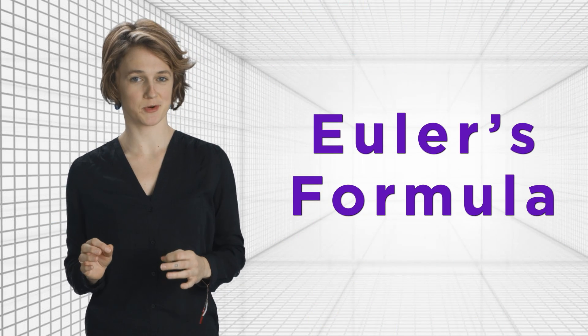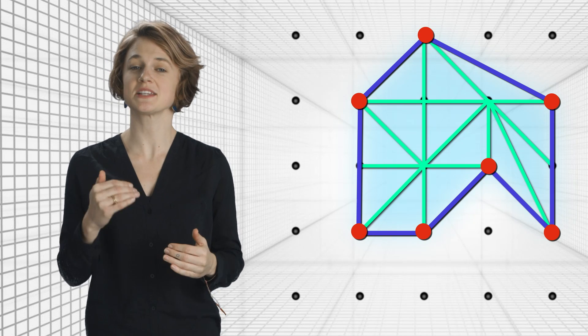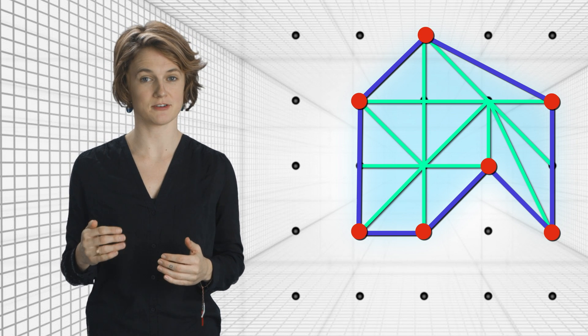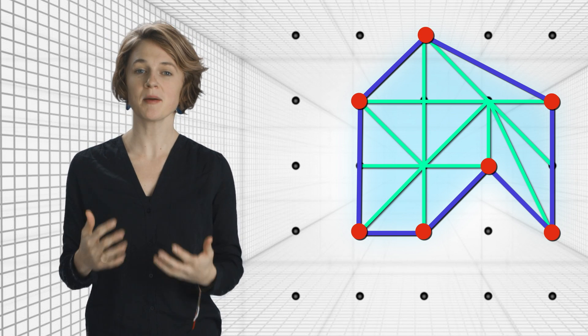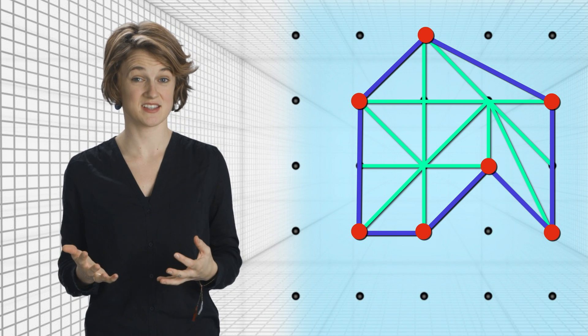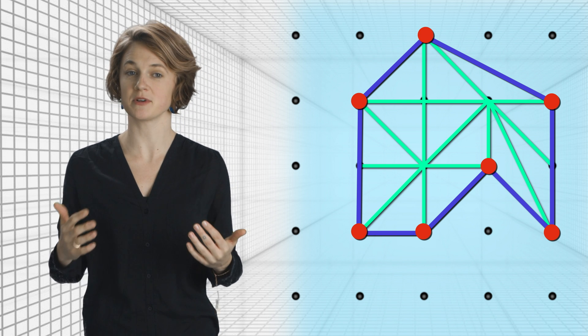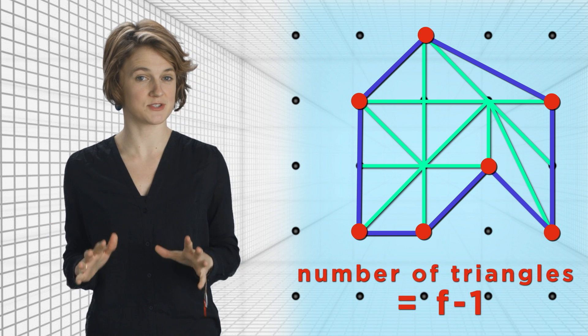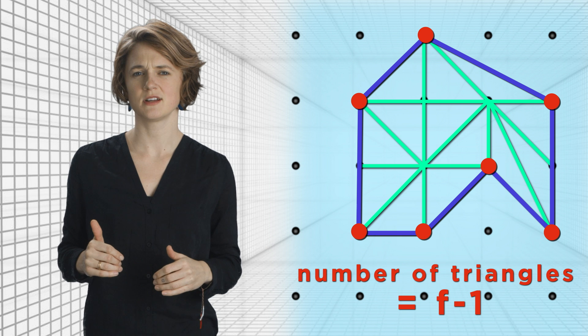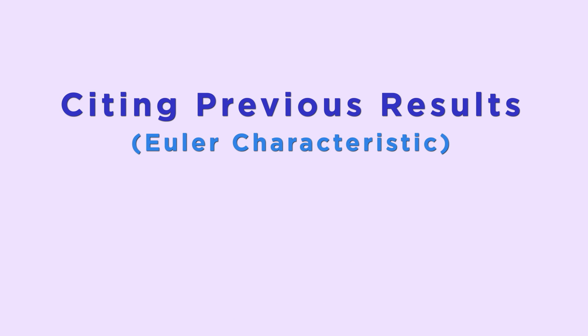Once we've triangulated our polygon, it looks like this, which is exactly the kind of graph with Euler characteristic 2. Remember that the area outside of the graph counts as one big face. So the number of triangles in the graph is one less than the number of faces. So it's f minus 1. Now, let's do a little computation using a few of our favorite math tools, including citing previous results, the Euler characteristic, and good old algebra.